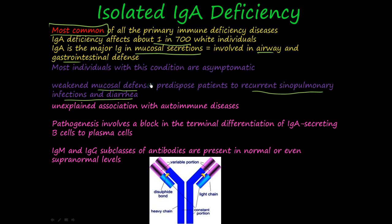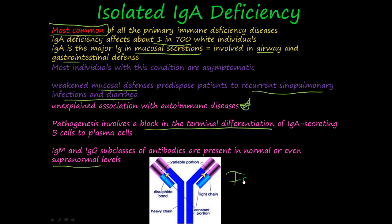There is an unexplained association with autoimmune diseases — some patients have autoimmune diseases. The pathogenesis involves a block in the terminal differentiation of IgA-secreting B cells into plasma cells, similar to the last condition. IgM and IgG subclass antibodies are present at normal or even supranormal levels, so IgM and IgG are present in normal abundance, but for some reason the IgA just doesn't get the job done.